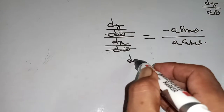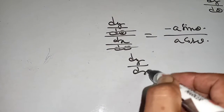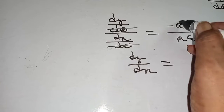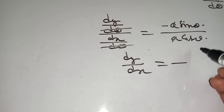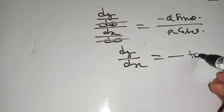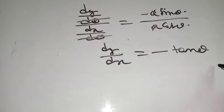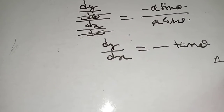Now, dy dx equal to — a cancels — it will be minus sin theta by cos theta, equal to minus tan theta. This is the answer.